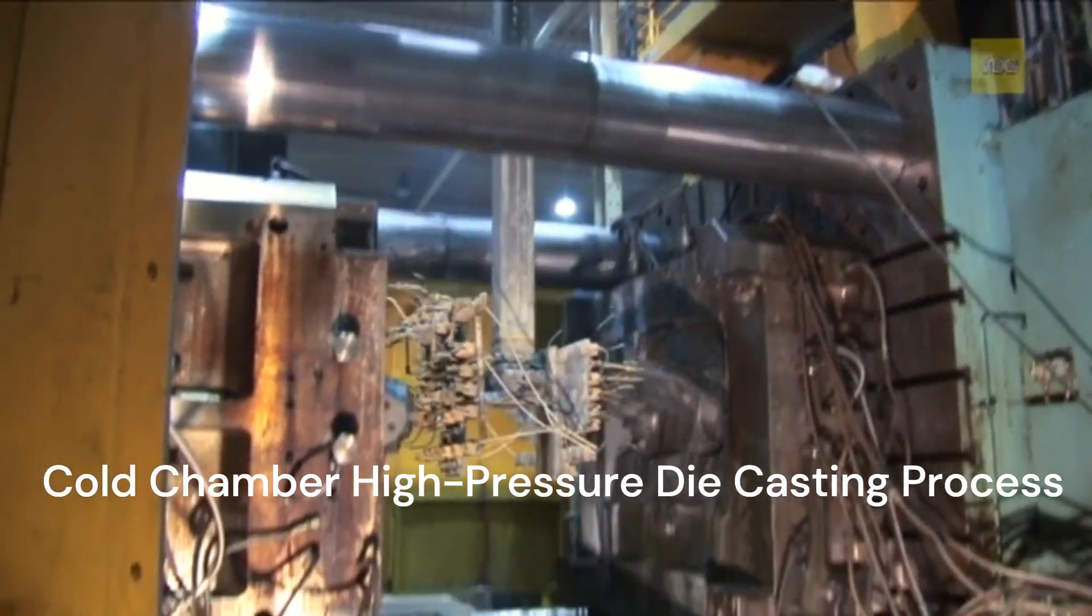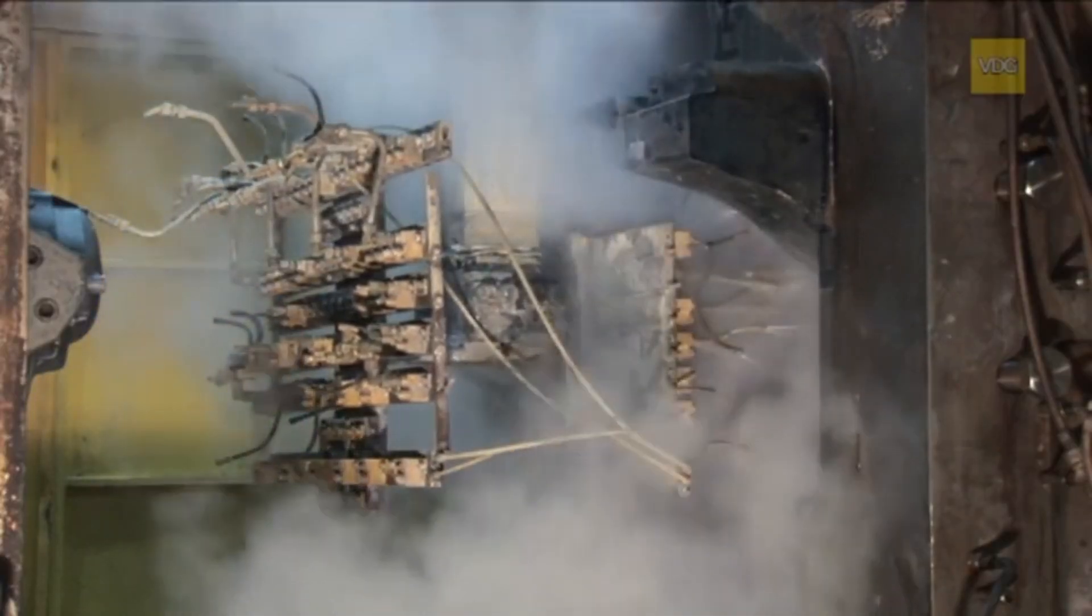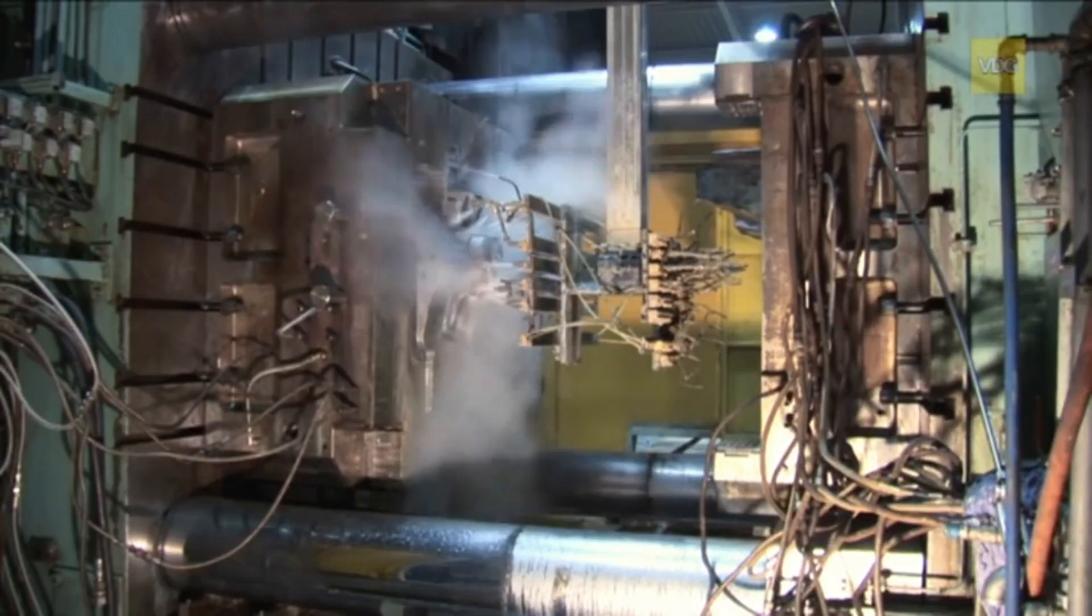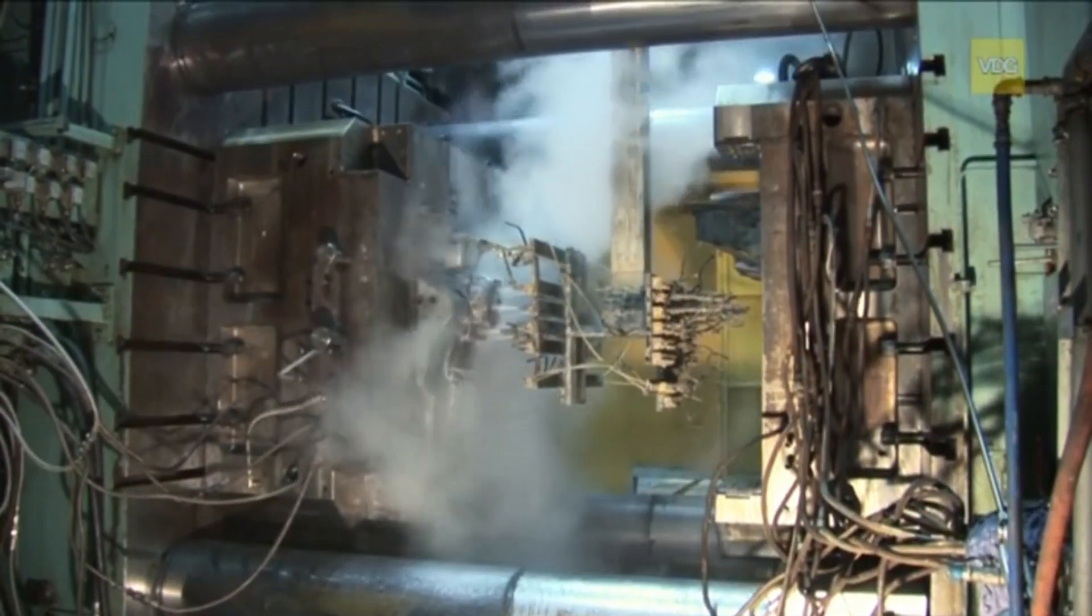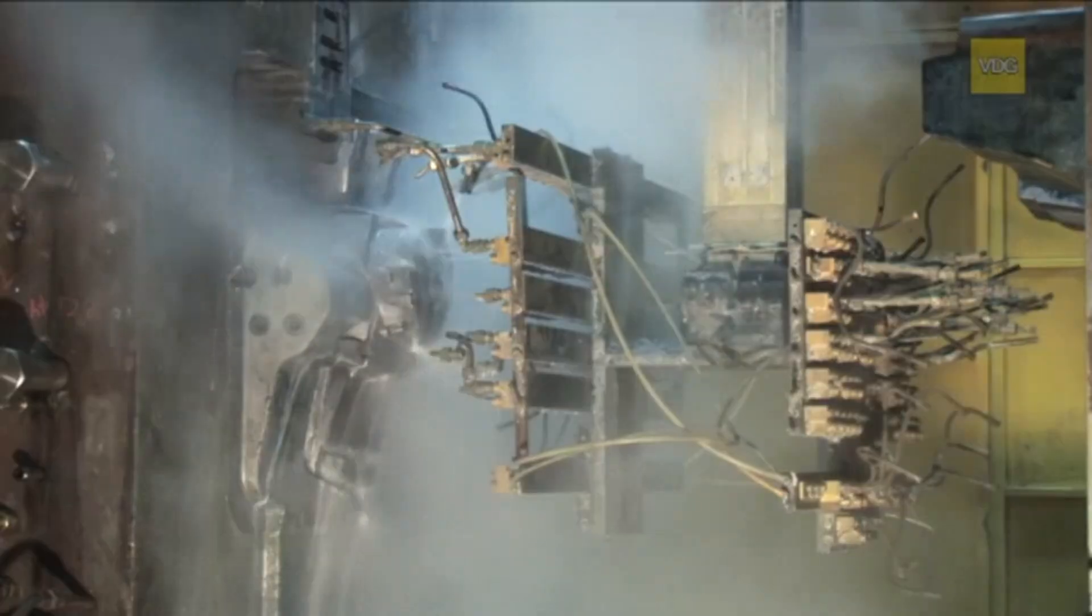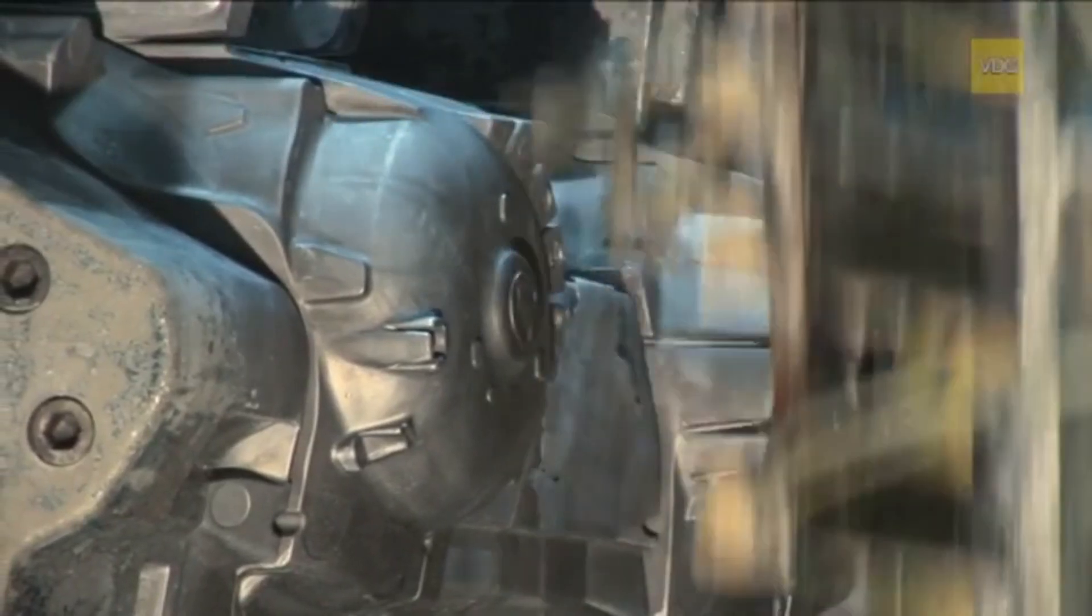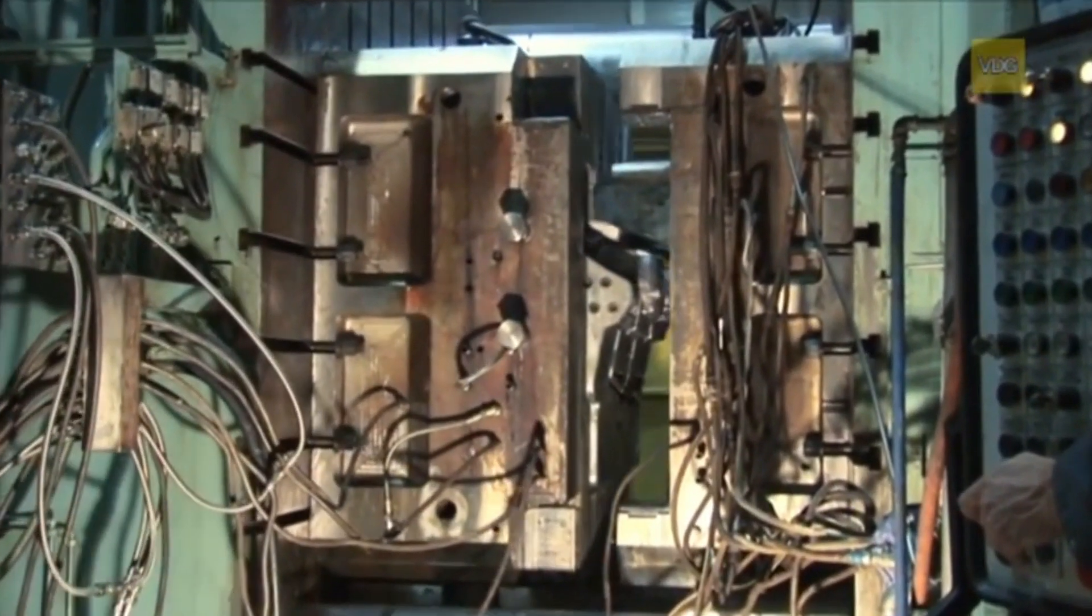This cold-chamber high-pressure die-casting machine clamps the die at 40 MN using a hydraulically-operated toggle system. It is primarily used for serial production of structural automotive components, such as strut mounts. After cleaning and spraying the mold surface with a water-soluble release agent, the mold is blown out and closed.